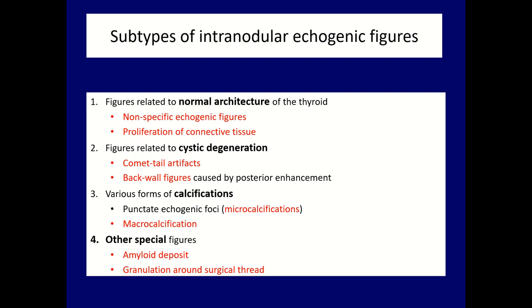The next two are the two forms of calcifications. Finally, there are special forms which are rarely mentioned in the literature — these are the amyloid deposit and the granulation around surgical thread.